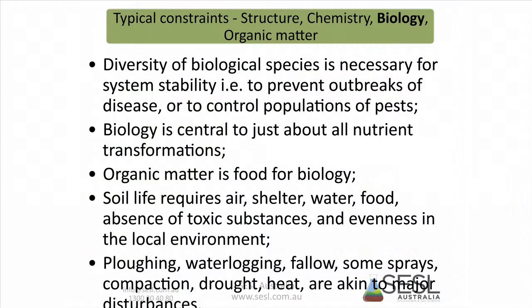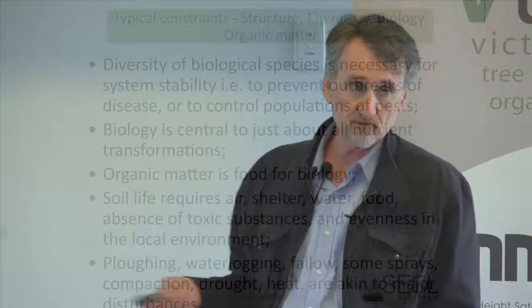Protecting the surface of the soil is protecting the part that is most active. When we bare that surface, we're killing off the part that is most active and most productive in the soil. Any kind of heavy intervention — plowing, waterlogging, leaving soils fallow or bare, spraying with herbicides, compaction, drought — these are all major disturbances to the soil ecosystem.